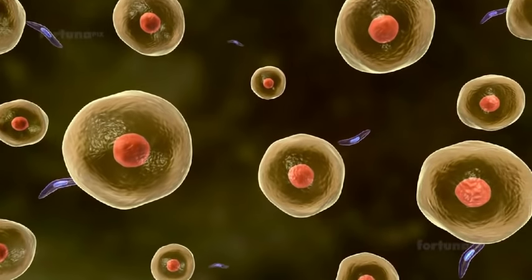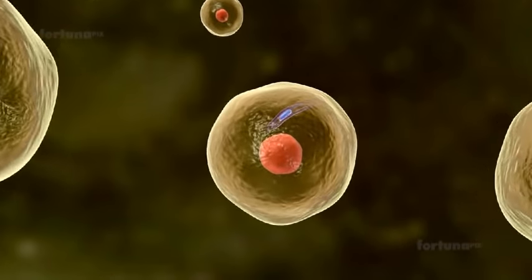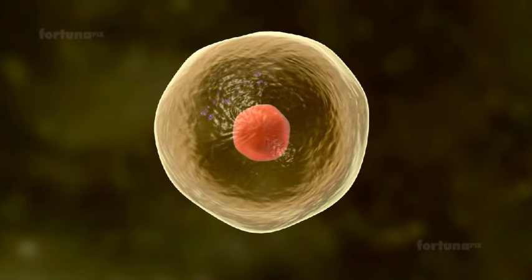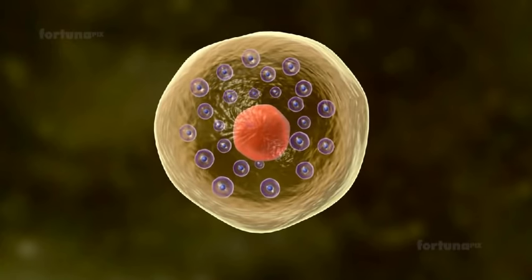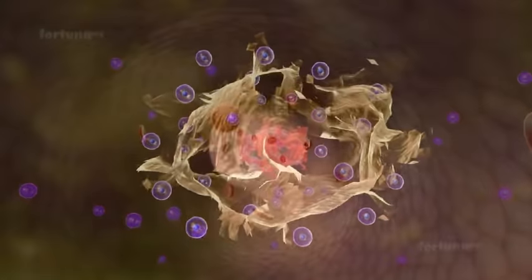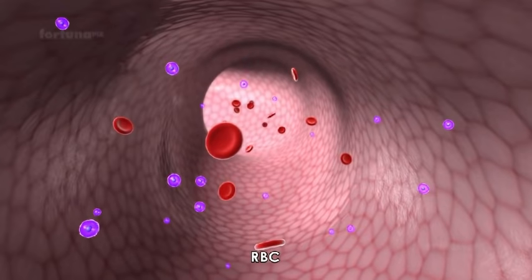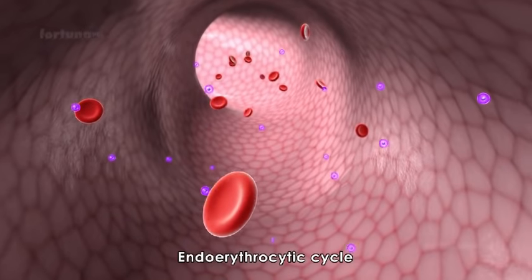The Sporozoites will multiply asexually into Merozoites in the Liver Cells. The Merozoites will break open the Liver Cells and enter the RBC, beginning the Endorhythrocytic Cycle.